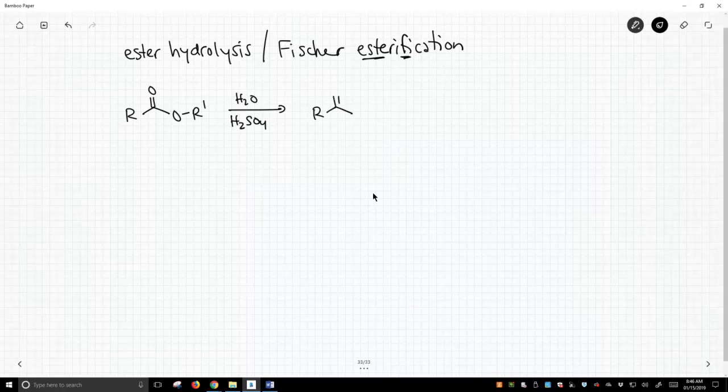And any time we hydrolyze an acid derivative like an ester, we will always get a carboxylic acid. And we'll break off whatever was on the carbonyl so we get that protonated so we form an alcohol. So this is an acid-catalyzed hydrolysis.